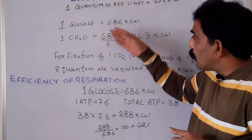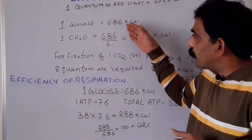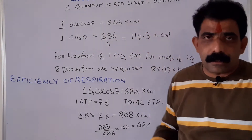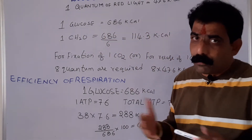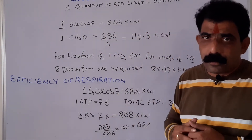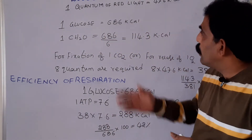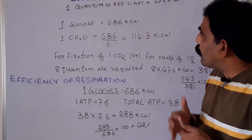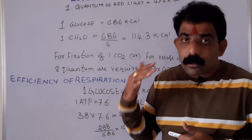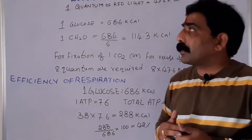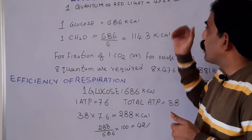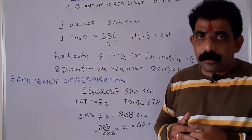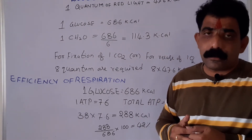The potential energy content of the glucose molecule is 686 kcal. Coming to one quantum of red light, or a photon of red light, it consists of 47.6 kcal of energy.